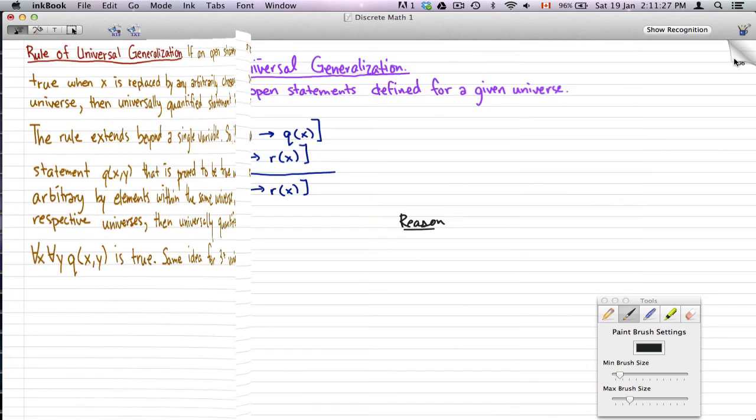So now that we got that out of our agenda, we're going to go ahead and apply this rule of universal generalization. Now, p(x), q(x), and r(x) are just open statements defined for a given universe. I don't have specific statements for it, but I just have a symbolic definition for the argument.